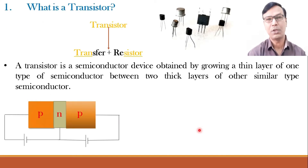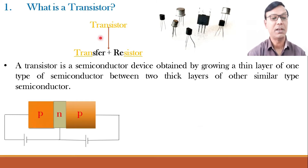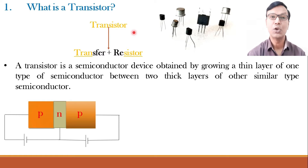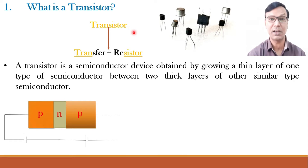Starting with what is a transistor. As I told you in the very first lecture, everything is there in the name. Just try to understand the name. The name transistor is made up of two words. The device that transfers the current from the low resistance circuit to the high resistance circuit is known as a transistor.